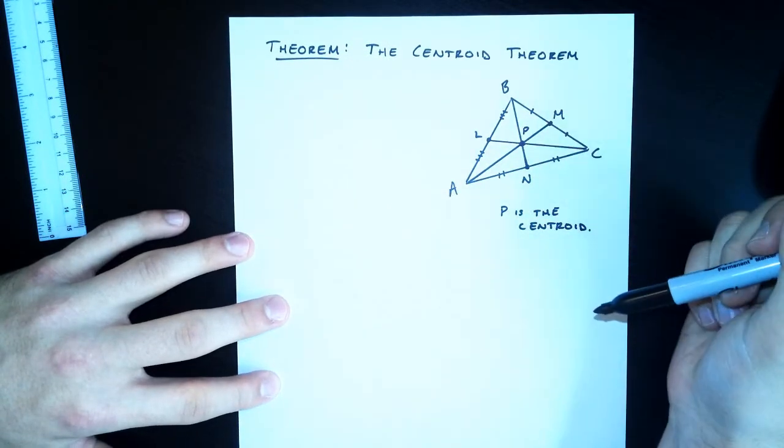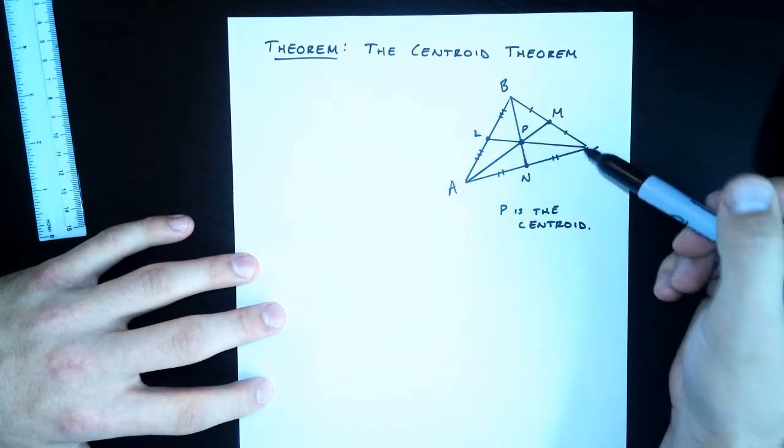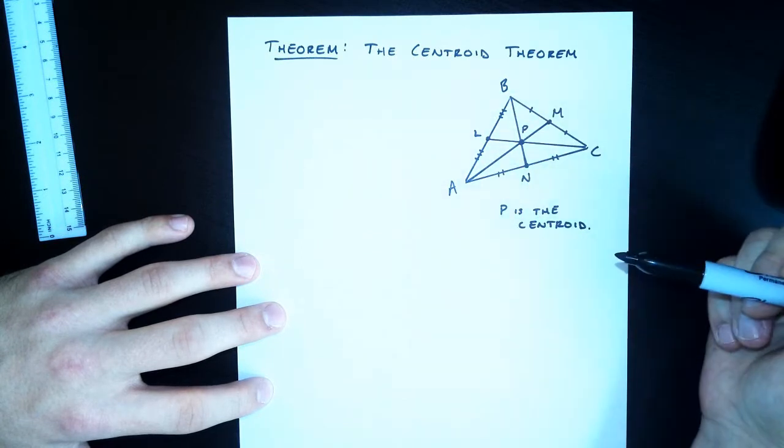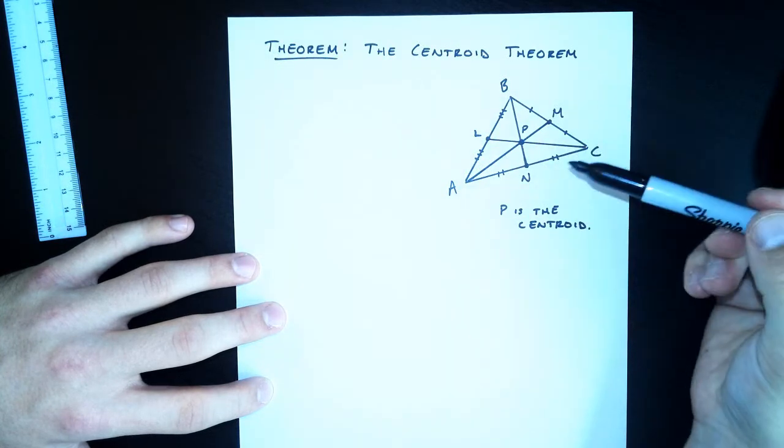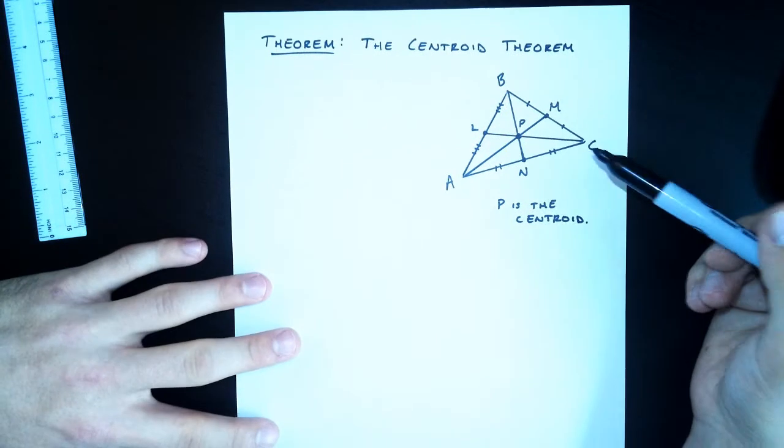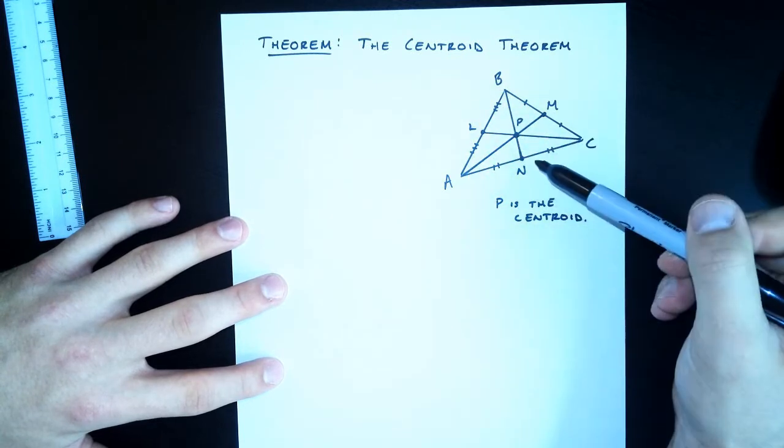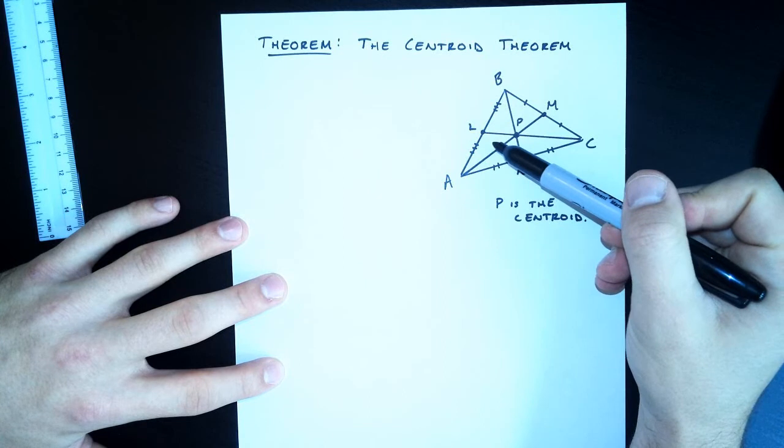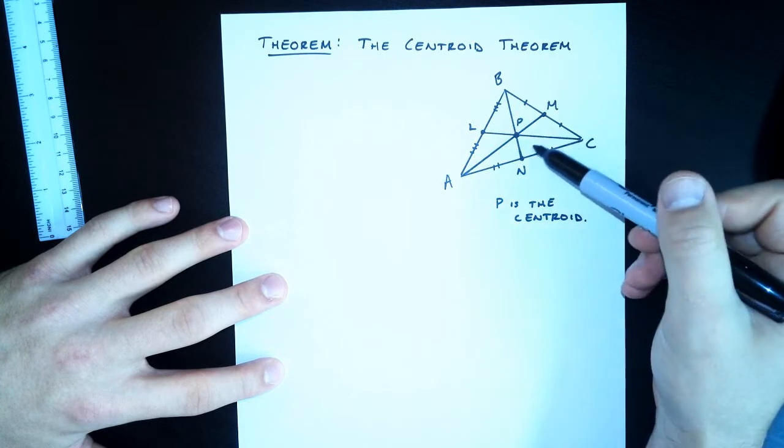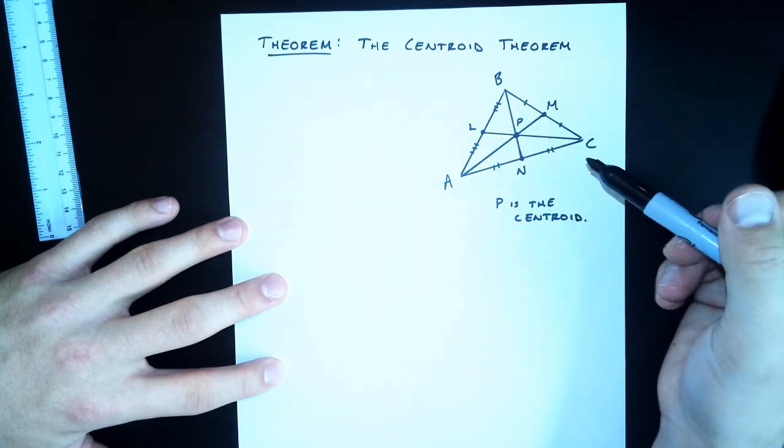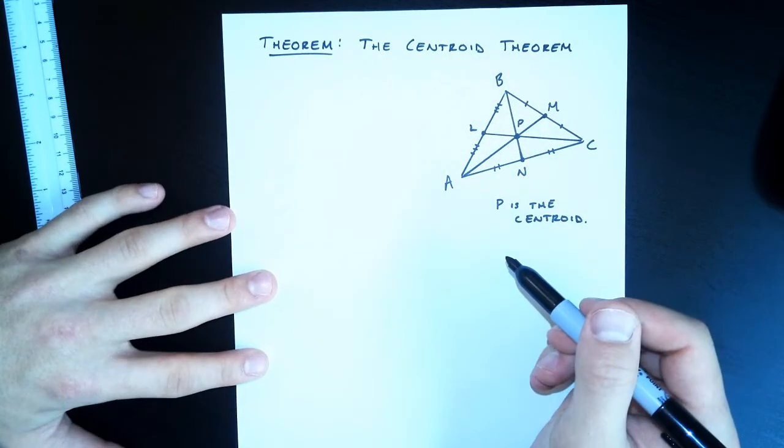Now, a couple neat things about the centroid. One, the centroid is also called the center of balance. So if you were to take this triangle and cut it out, you'd be able to balance it on point P, right on the tip of your pen. Another neat thing about the centroid, which we are going to need for our justification for this theorem, is that when we draw in these medians, our original triangle gets split up into six triangles here. They're not necessarily congruent triangles, they look pretty different from each other, but they all have the same area. And that's going to be important for helping justify this theorem.